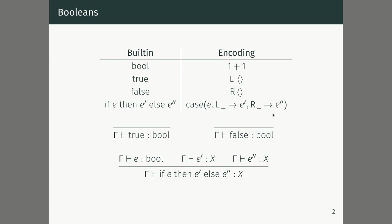We can also make Booleans a primitive type, introducing rules for true and false — both always of Boolean type. For if-then-else, a conditional expression has type X when e is a Boolean, e prime is an X, and e double prime is an X. This way, regardless of whether you take the left or right branch, the whole expression has type X.